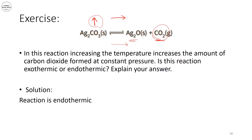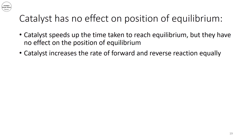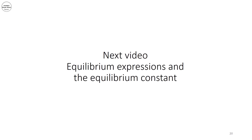What about a catalyst? A catalyst does not affect the position of equilibrium. It only affects the time taken to reach equilibrium by speeding up both the forward and reverse directions equally. So the equilibrium position remains the same, but is reached faster. In the next video, we will explain equilibrium expressions and the equilibrium constant. Thank you and goodbye.